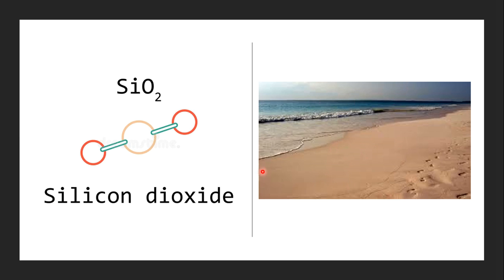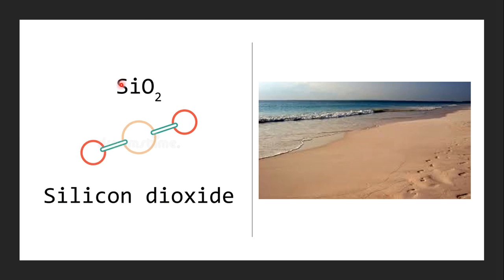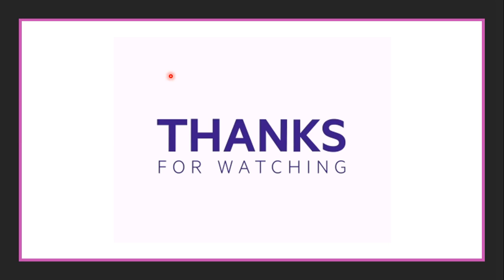The sand at the beach is made up of silicon dioxide, SiO₂ — made up of silicon and oxygen atoms. This is not a molecular formula; it means that for every single silicon atom there are two oxygen atoms. Also, silicon is used to make glass — like window glass — which comes from sand. Interesting fact!